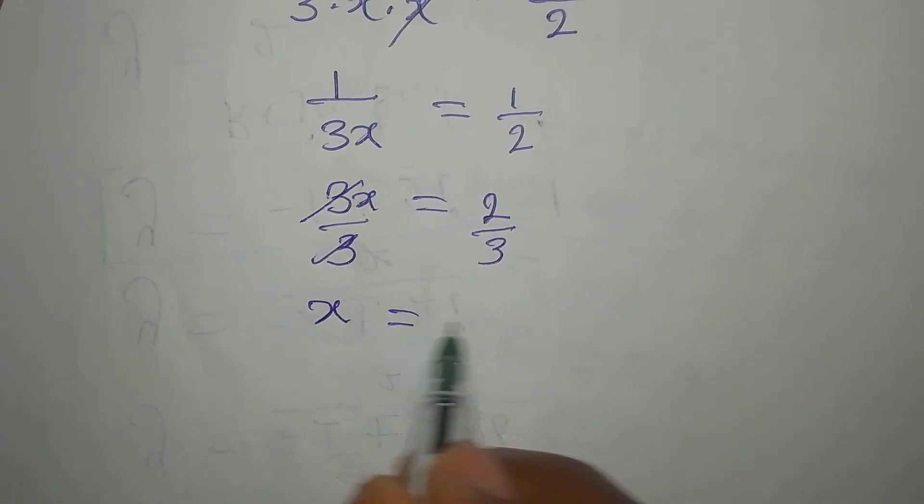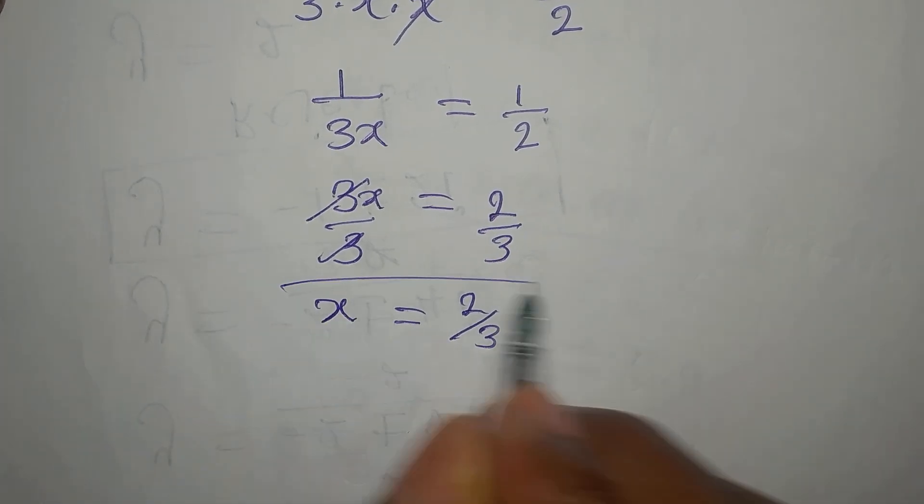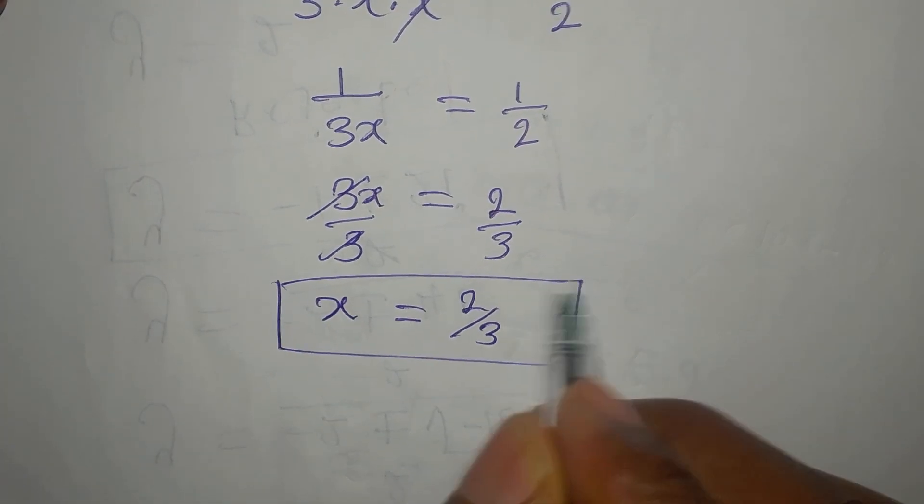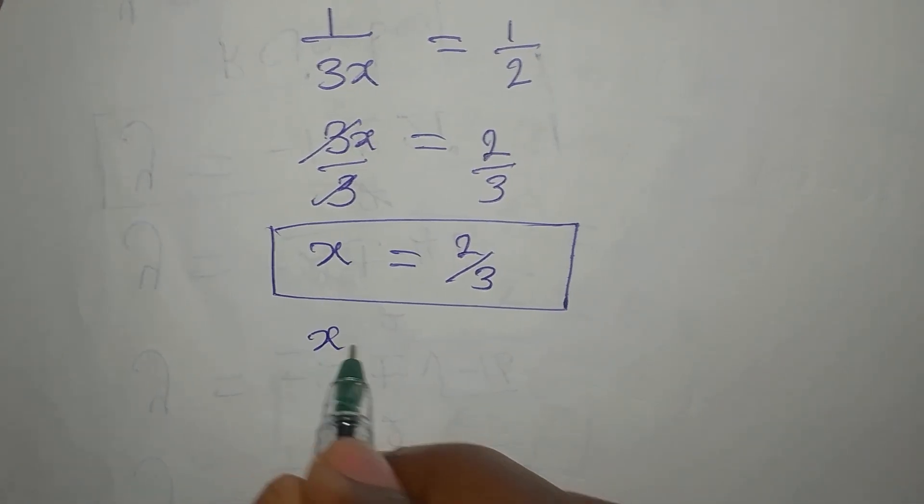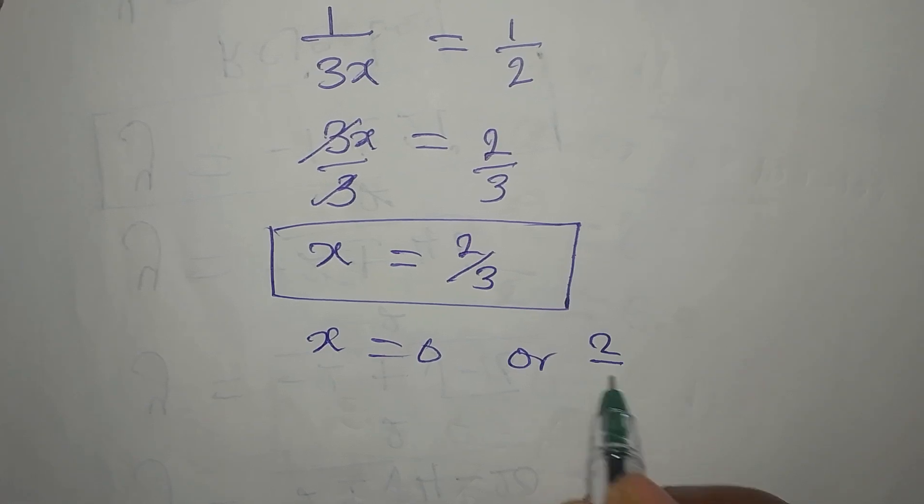This is the only solution using the second equation, but the first equation gives us x equals 0 or 2 over 3.